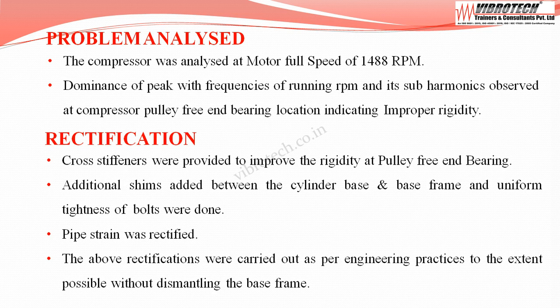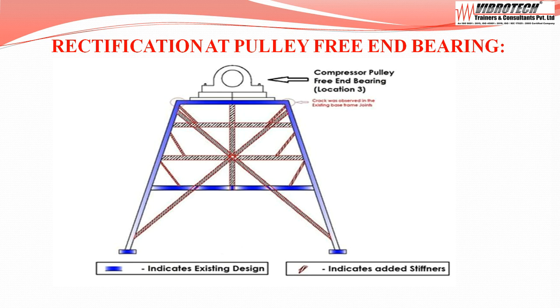To rectify the problem, the following activities were carried out: cross stiffeners were provided to improve the rigidity at the pulley free end bearing. Additional shims were added between the cylinder base and base frame, and uniform tightening of bolts was done. Pipe strain was rectified. These rectifications were carried out as per engineering practices, to the extent possible without dismantling the base frame. The picture shows the existing design and additional stiffeners provided at the pulley free end bearing.